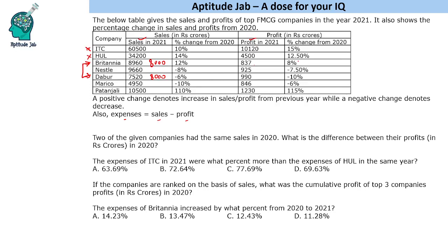Britannia had an 8 percent profit increase, meaning 2021 profit is 108 percent of 2020 profit. Calculating: 31 times 25 gives 775, so Britannia's 2020 profit is 775 crores. Dabur had a 10 percent decrease, making its 2020 profit 1100 crores (since 1100 minus 10 percent, which is 110, gives 990). The difference between their profits is 1100 minus 775, which equals 325 crores.